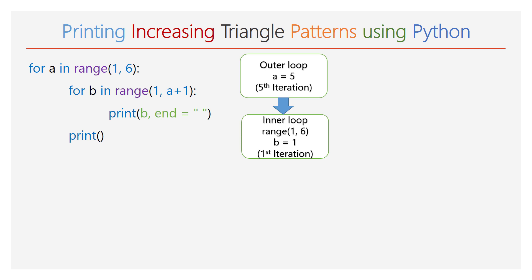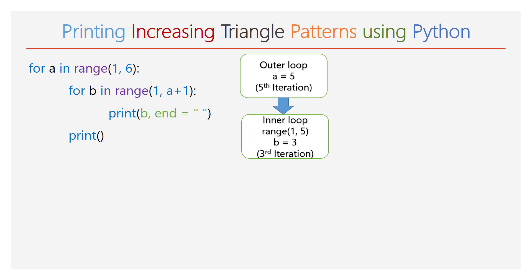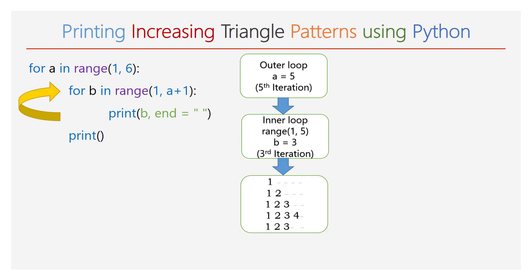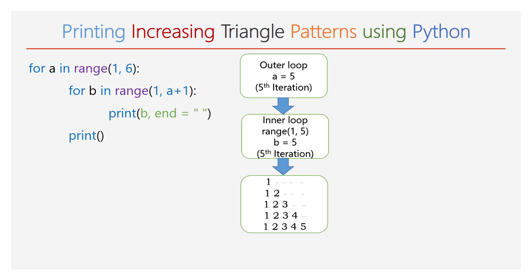The range of b will be 1 to 6, and the inner for loop will iterate for 5 times. During each iteration: first b=1, second b=2, printing 2; third b=3, you can see 3; fourth b=4, you can see 4; and in the fifth iteration the value of b will be 5. Hence, in the fifth line you can see the numbers 1, 2, 3, 4, and 5. Next, the empty print function is executed and the cursor takes a new line. The execution comes out of the outer for loop.